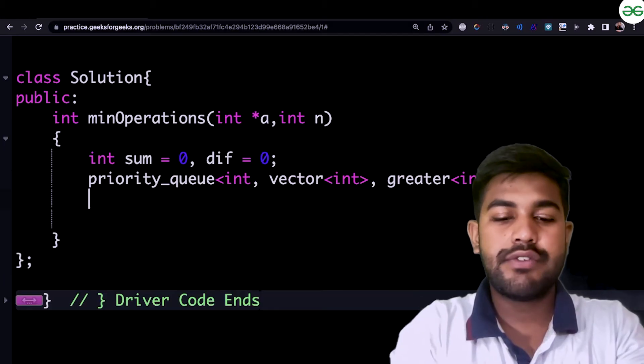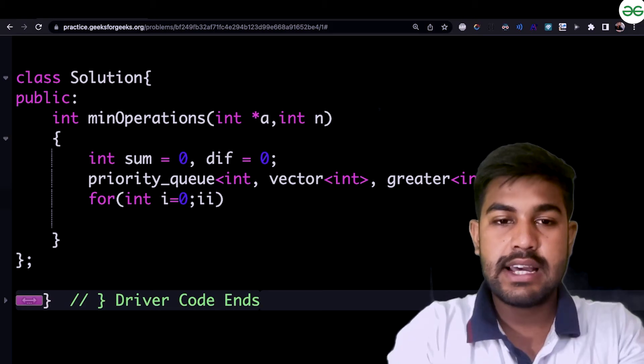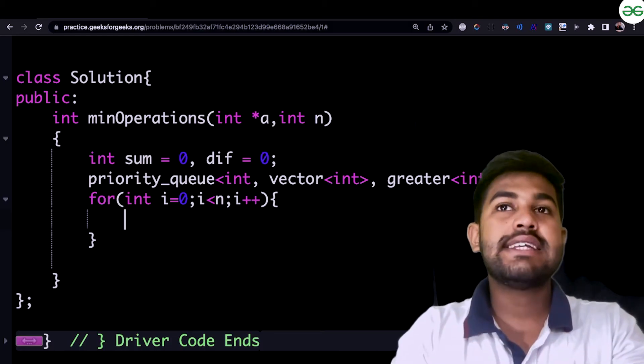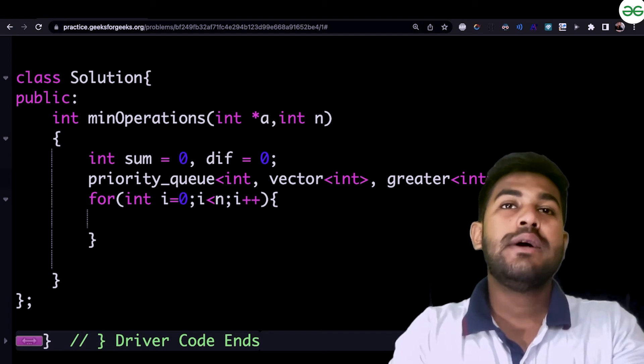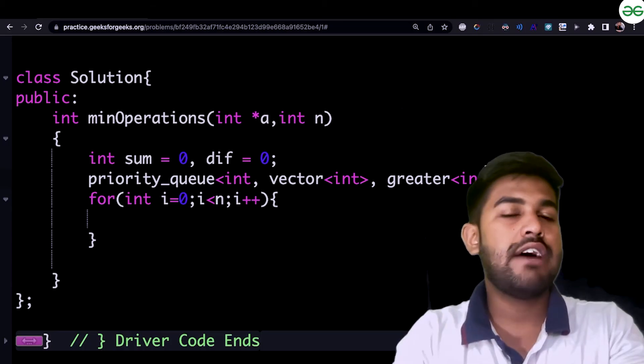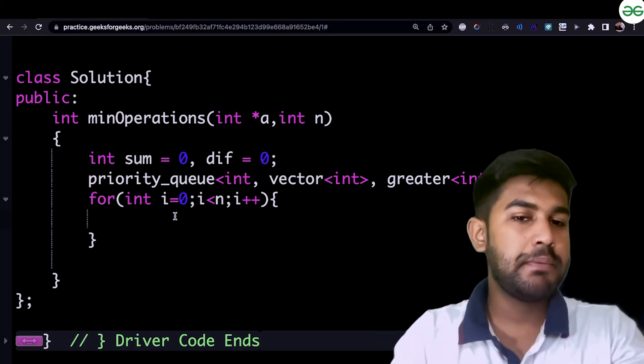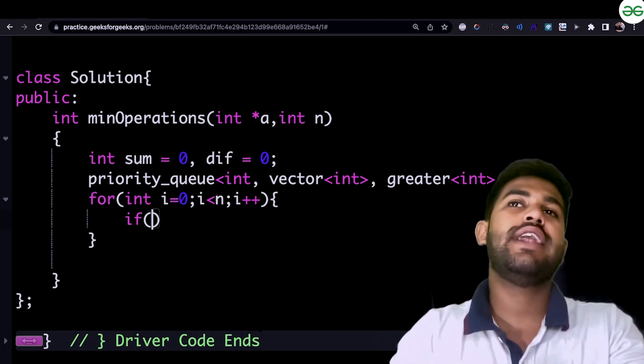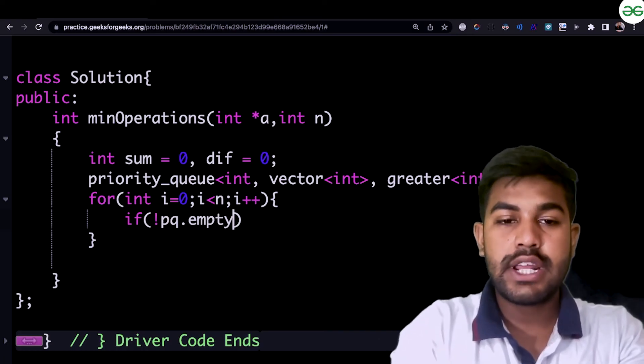Now we would start the iteration from the first element itself. So int i equals 0, i less than n and i plus plus. So by the way, even if you don't remember the syntax of minheap, what you can do is you can just multiply it with minus 1 before inserting and again multiply it with minus 1 after extracting. And that default priority queue, which is the maxheap, would be converted to minheap by this method.